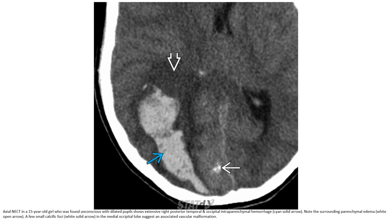Non-contrast enhanced CT in a 15-year-old girl who presented with dilated pupil: there is extensive right posterior temporal and occipital intraparenchymal hemorrhage with surrounding edema. Note the few small calcifications in the right occipital lobe, suggesting an associated vascular malformation hemorrhage.